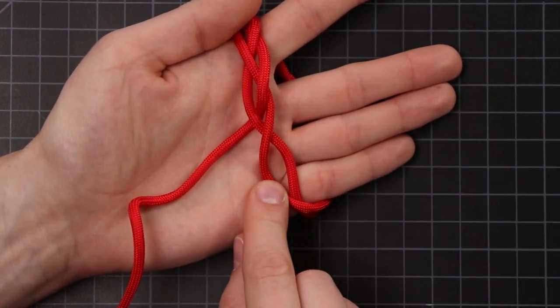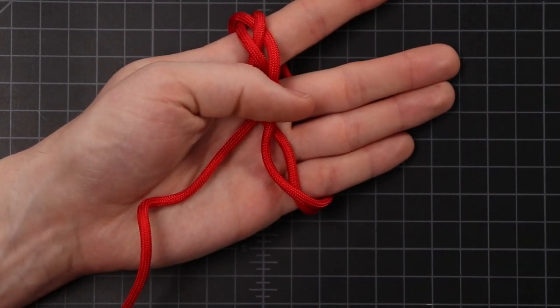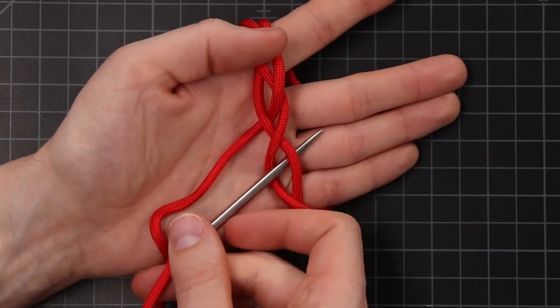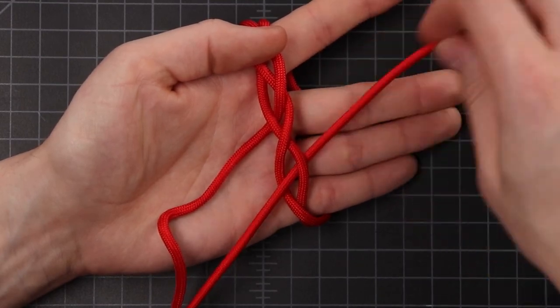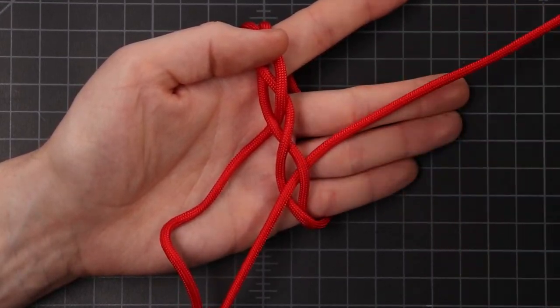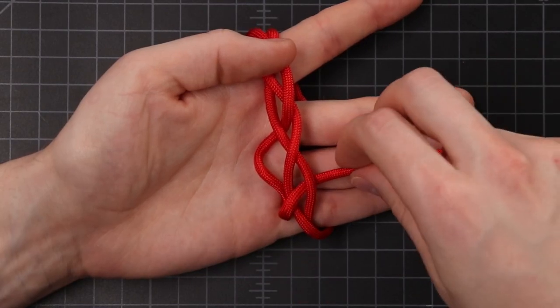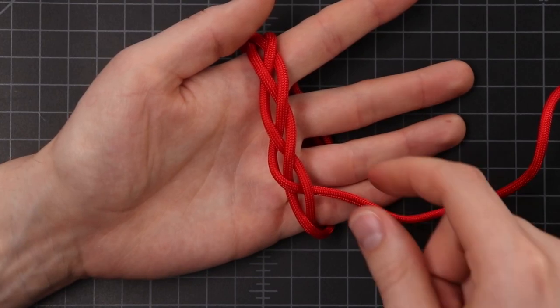Bring that right side cord over the top to make this hole right here. Over the first, under the second. Shifting up again.